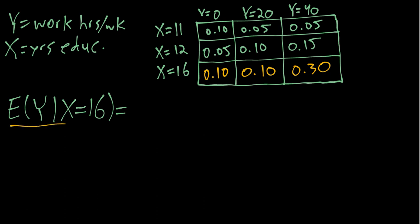So ultimately our goal here is to compute the conditional mean of Y given X equals 16. In other words, if we only focus on the subpopulation of individuals with 16 years of education, what is their mean work hours per week? In order to compute the conditional mean, we'll use the formula where we multiply the values times the probabilities, in this case conditional probabilities.